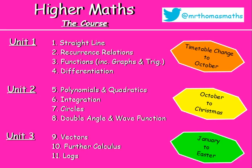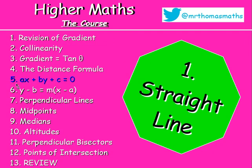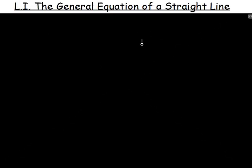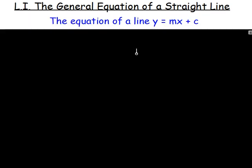Here we go with this next lesson in the straight line chapter. We're now on lesson five, and I'm calling it ax plus by plus c equals zero. This equation here is really the general equation of a straight line. And I know what you're all thinking — you're all shouting, no it's not. The general equation of a straight line is y equals mx plus c.